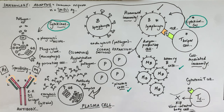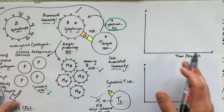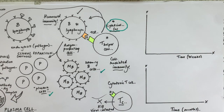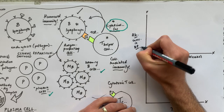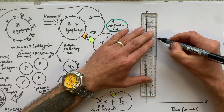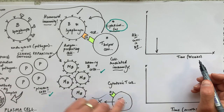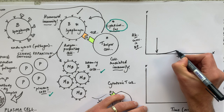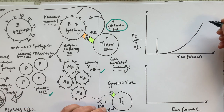Now let's look at vaccinations. The x-axis shows time in weeks and the y-axis shows antibody concentration in the blood plasma. Imagine an infection or injection of a vaccine at a given time point — the concentration of specific antibody produced by plasma cells would go up over several weeks, slowly increasing as more plasma cells make more antibody.